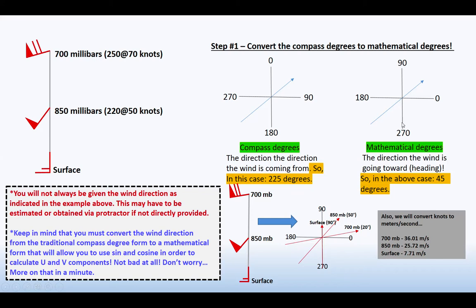But when you shift over to mathematical degrees, which is what you have to do to convert to calculate SRH, you have to make the conversion to mathematical degrees. It's the direction the wind is heading toward. So no longer the direction it's heading from, but the direction it's heading toward. And so in this case, it's heading toward 45 degrees in the mathematical degree reference frame. So toward 45 degrees.